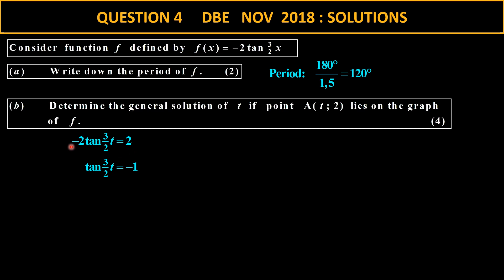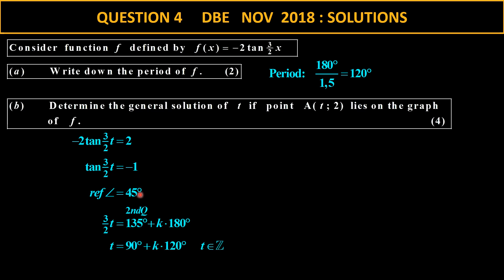The reference angle for 1 is 45 — don't use the negative 1. Tangent is negative in the second quadrant, and because it's a tangent you don't need to look at the fourth quadrant due to the period of 180. I then divide by 3 over 2: 135 divided by 1.5 gives 90, and 180 divided by 1.5 gives 120. Don't forget to indicate t is an element of the integers. There's the general solution.